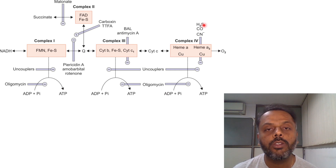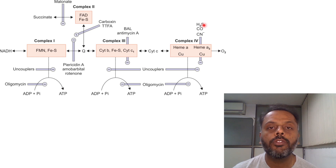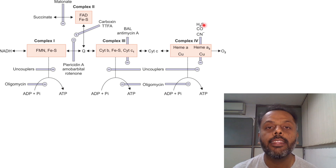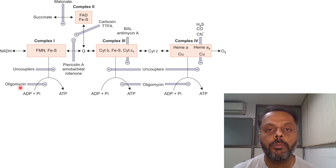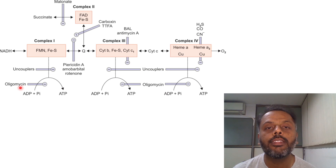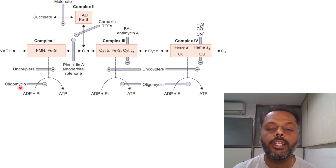Inhibitors of oxidative phosphorylation completely block both the oxidation and phosphorylation processes. The example is oligomycin, which completely inhibits oxidative phosphorylation by inhibiting the F0 portion of the ATP synthase complex, that is complex 5.